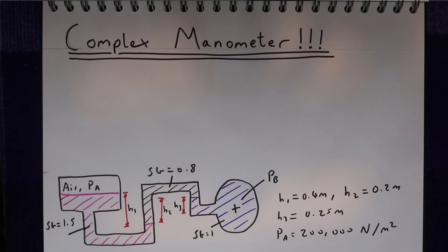So we've got three fluids: one here with a specific gravity of 1.5, one here with a specific gravity of 0.8, and this is water with a specific gravity of 1.